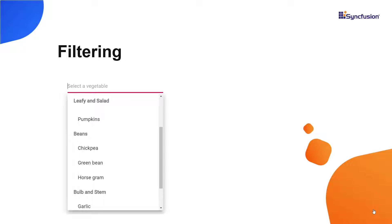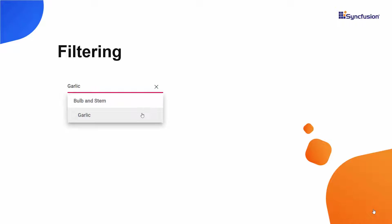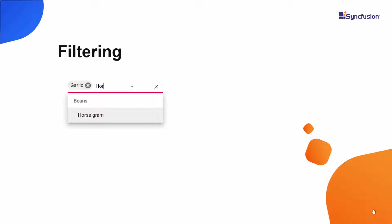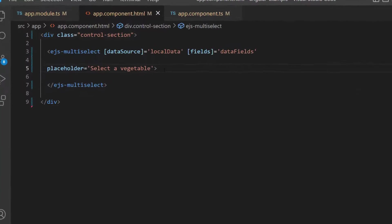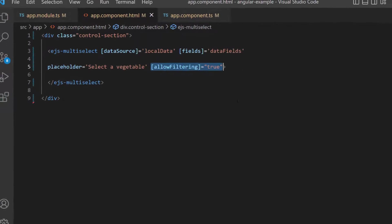Next, I am going to show you how to filter the data items in the multi-select drop-down based on the characters I type in the search box. To start filtering the data items, I need to enable the filtering feature. To do that, I define the property allowFiltering and set its value to true inside the multi-select drop-down code.